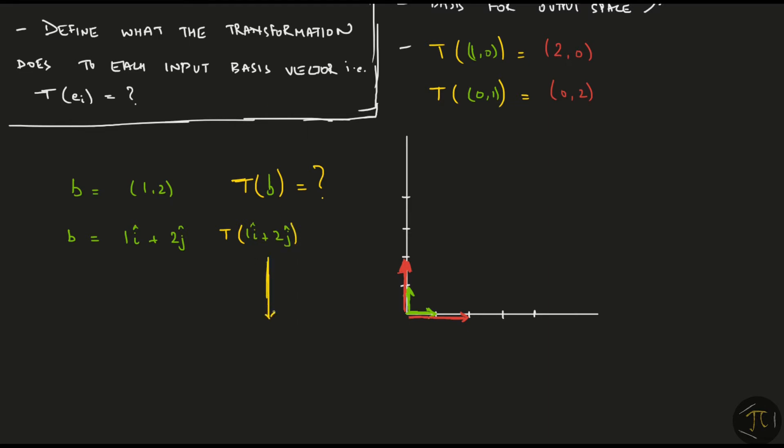Because of the way we've defined linear transformation, remember those properties, we can write this as 1 times the transformation of i hat plus 2 times the transformation of j hat. We have already defined what happens to i hat and j hat up there, so we just substitute for them and we get the answer to where the vector d must land. Looking at the same thing graphically, d was initially 1i plus 2j, and after the transformation, it's 1 times the transformation of i hat plus 2 times the transformation of j hat.